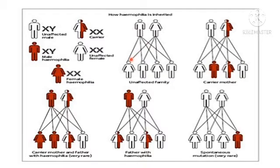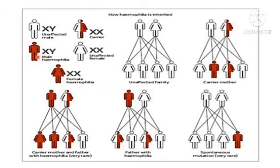Now let's look at the last slide about hemophilia, which is an X-linked recessive disorder. The father carries XY chromosomes and is normal. For females, if one X chromosome is affected, she is called a carrier. If both X chromosomes are affected, she is a diseased female with hemophilia. A male who carries one affected X chromosome will express the disease and is a diseased male with hemophilia.